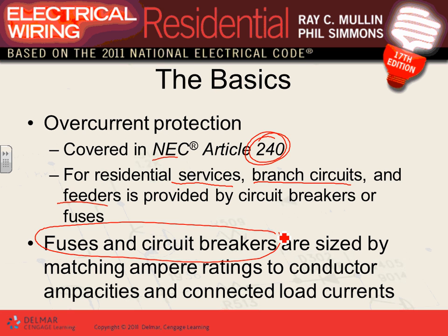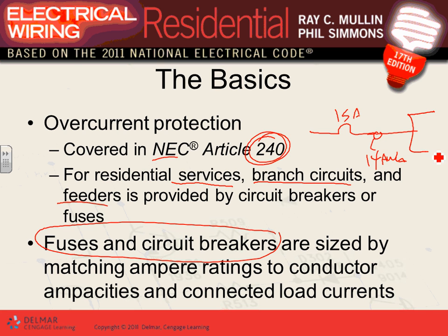When we size fuses and circuit breakers, we size them based on the ampacity of the conductors and equipment. For example, if I have a 15-amp circuit breaker, I know I can put number 14 AWG, and non-continuously I can pull 15 amps. Number 14 is capable of carrying up to 15 amps under normal operating conditions per the code.